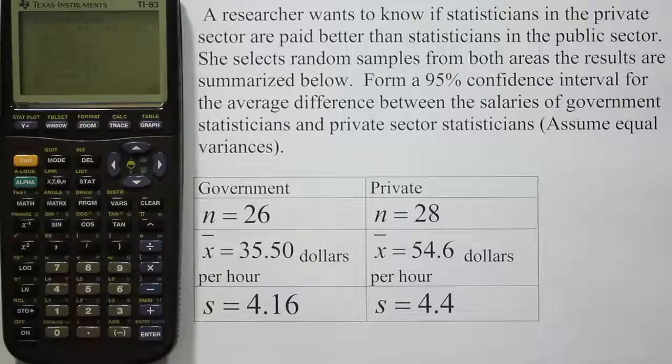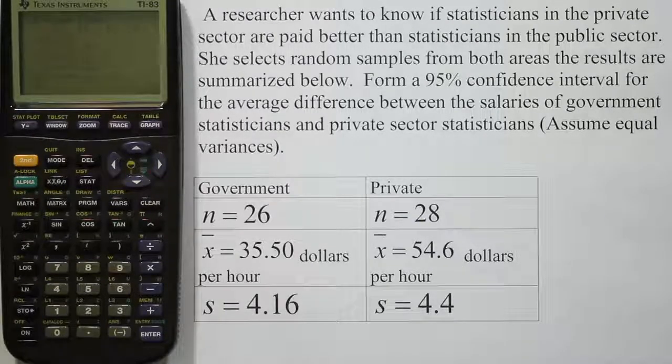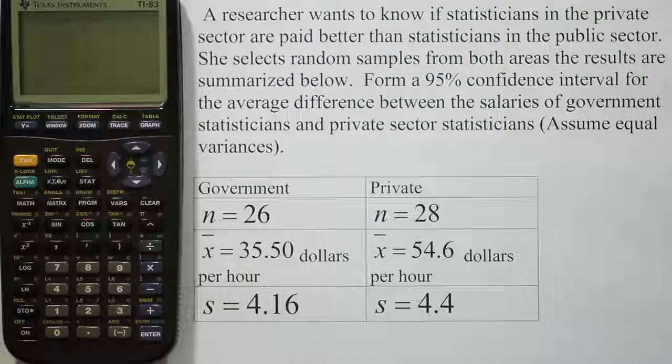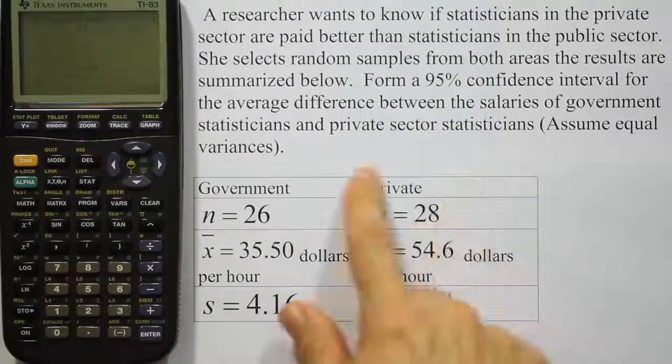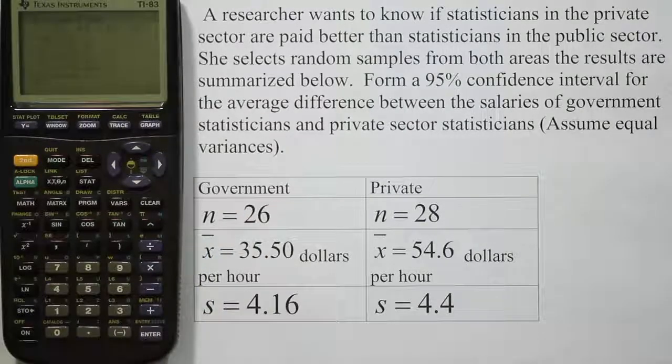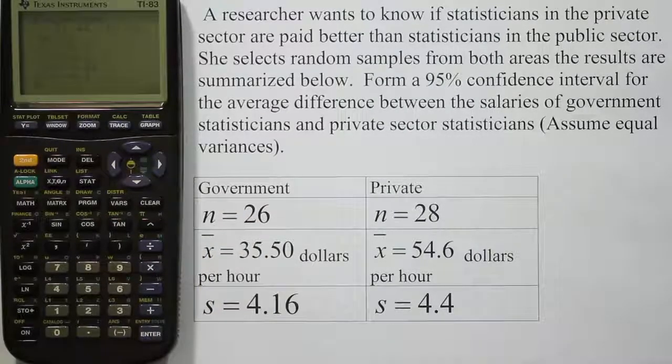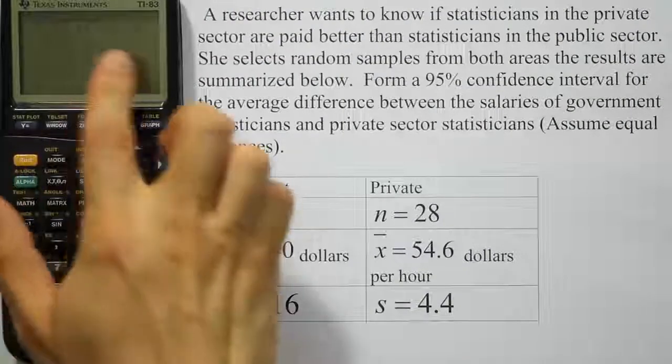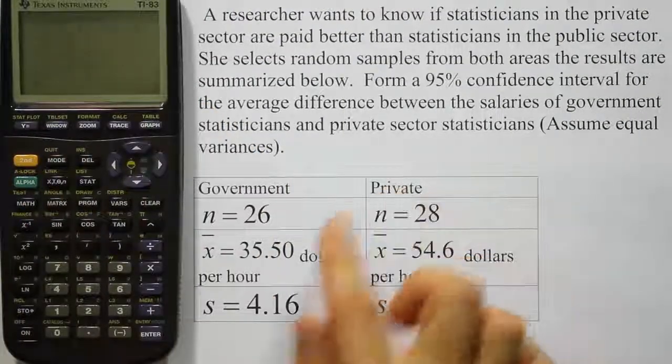Now notice the interval is entirely negative and that would imply that essentially, based on how we did the subtraction, that the private sector statisticians make more money on average than the government statisticians. There's a statistically significant difference between them since both of the intervals here are negative, which means the private was clearly bigger than the government.